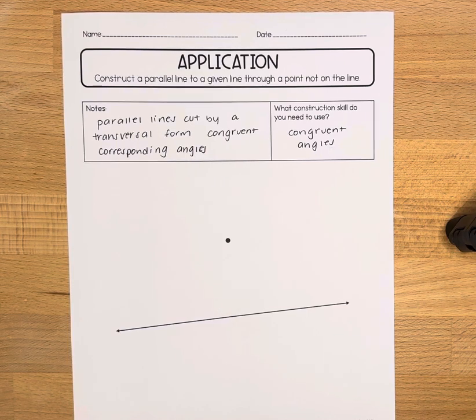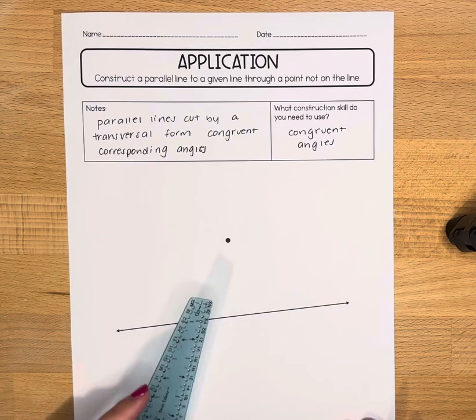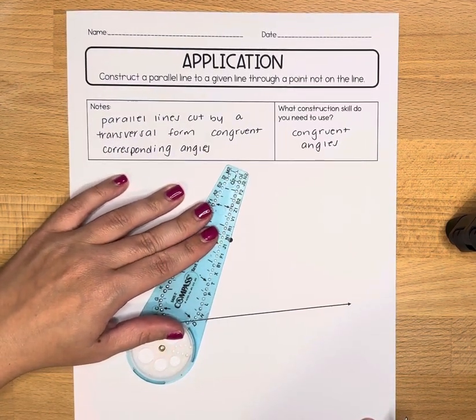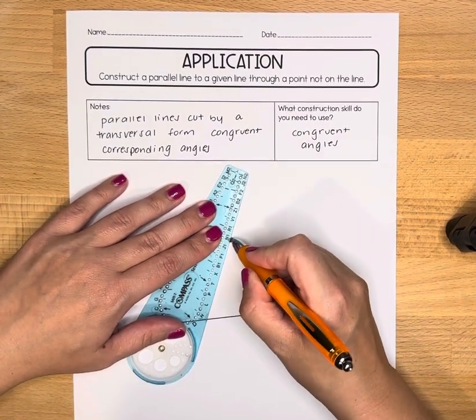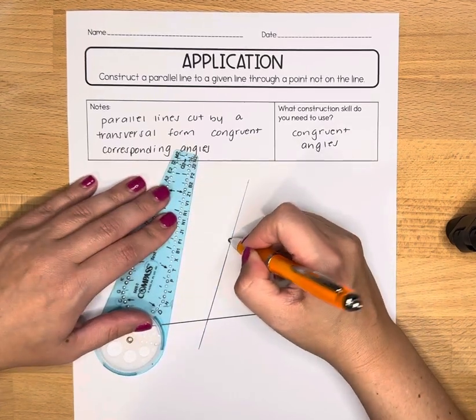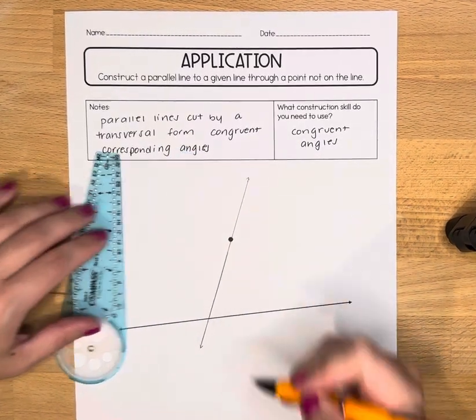So that means we are going to do the congruent angle construction, but what we need to do first is we need to draw a transversal. Use a straight edge and draw a line that goes through that initial point, and that is your transversal.